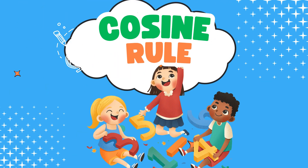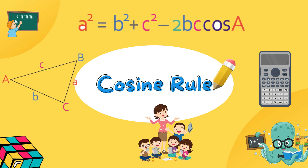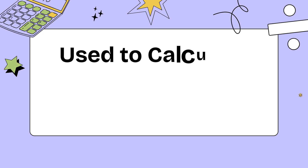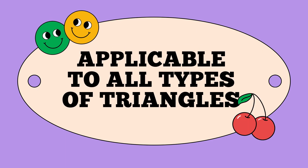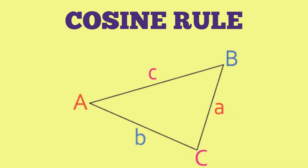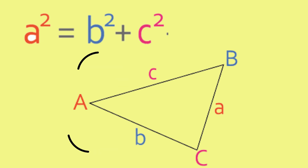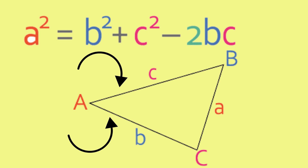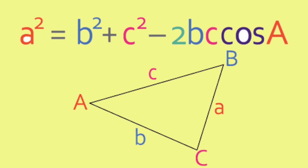Let's examine the cosine rule. The cosine rule is a formula which can be used to calculate missing sides or missing angles of a triangle. Like the sine rule, it can be applied to any type of triangle, including right-angled triangles. The cosine rule begins in a similar way to Pythagoras' theorem. It states that the square of any side equals the sum of the squares of the other two sides, minus two times the product of those two sides times the cosine of the angle opposite the first side.